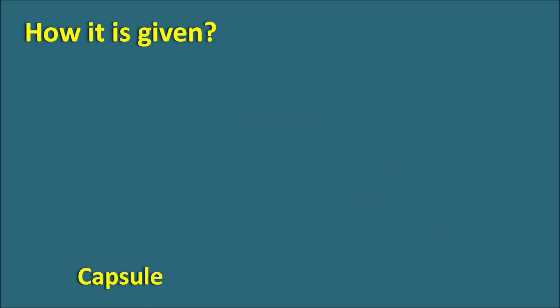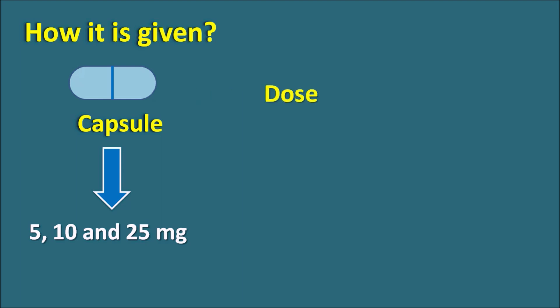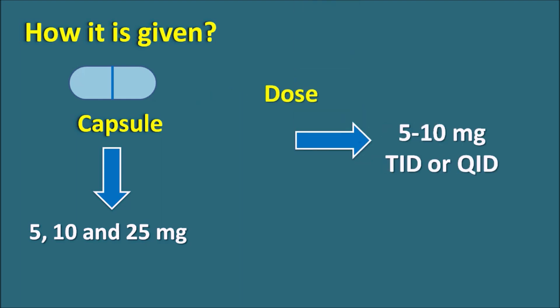Chlordiazepoxide is available as capsules in doses of 5 mg, 10 mg, and 25 mg. The dose is initiated at 5 to 10 mg TID or QID — that is, 3 to 4 times daily. In geriatric patients, the dose should be reduced to decrease sedation and ataxia. The dose can be increased according to the degree of anxiety: for mild anxiety, a low dose is used; for severe anxiety disorder, the dose can be increased up to 25 mg.